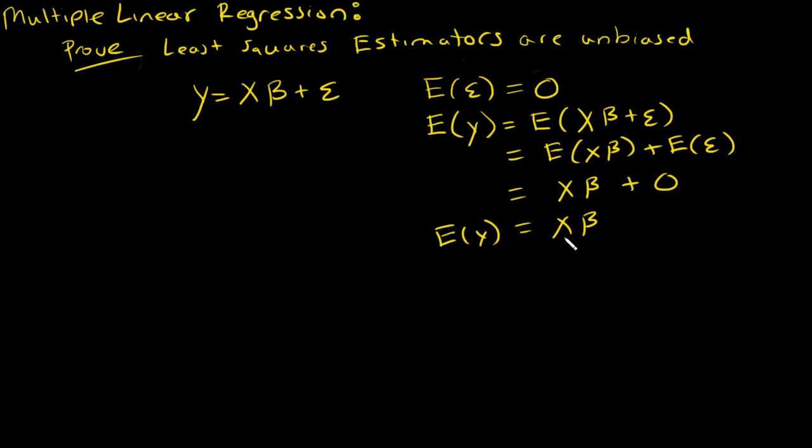Also we showed in the previous video that our estimator, b, is x transpose x inverse times x transpose y. This is our estimator of beta.